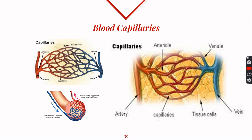First we will revise about the blood capillaries. These capillaries are very thin-walled, and any exchange between the blood and the surrounding tissues always occurs through the walls of the capillaries. While the blood is flowing under high pressure through the capillaries, many things escape out of the blood and go into the spaces between the cells.